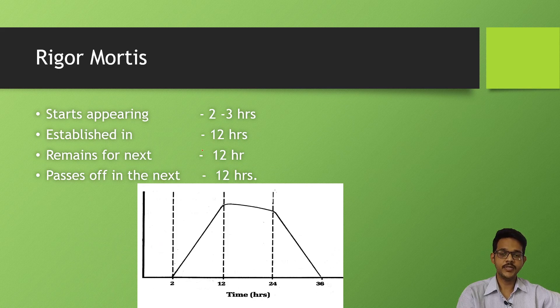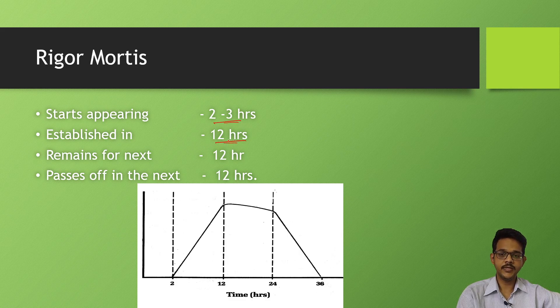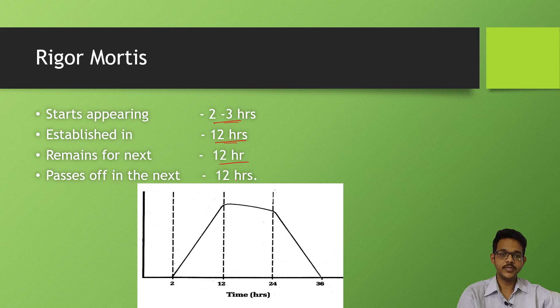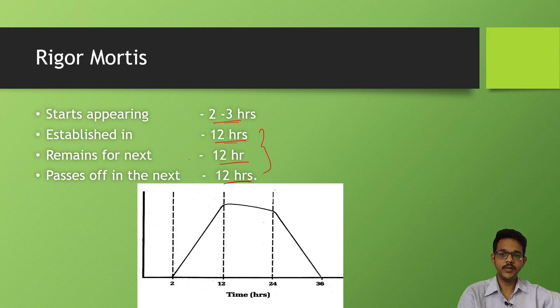Rigor mortis is the stiffening of muscles. It starts after two to three hours in the small muscles of the eyes. Takes about 12 hours to completely rigidify all the body, which can be tested by flexing and extending the fingers. Remains for 12 hours and passes after 12 hours. So you can remember as 12, 12, 12: 12 hours to completely rigidify.